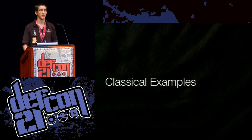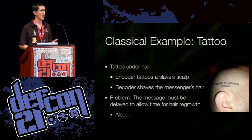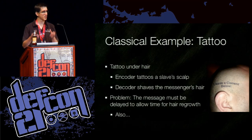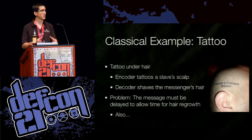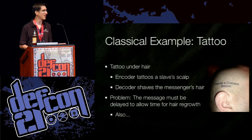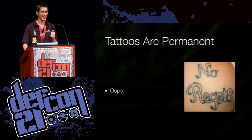So let's go through some classical examples. The first example I want to show is a tattoo. Basically, somebody would take one of their slaves — and again, this is back in the day when people had slaves — they would shave the scalp, tattoo a message on the scalp, and wait for the hair to regrow. They would send the slave to the recipient with a package, and when they found some private time, they would shave the head and read the message. A couple of problems: the message has to be delayed, and tattoos are permanent. No regrets.